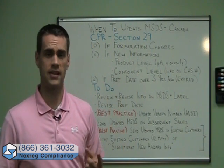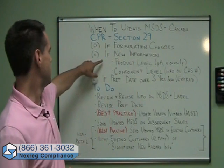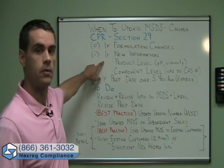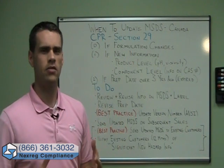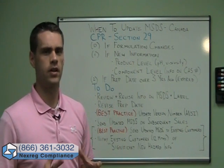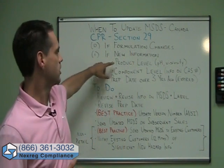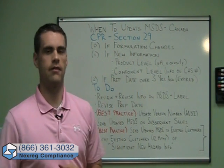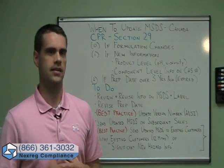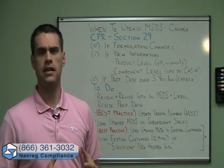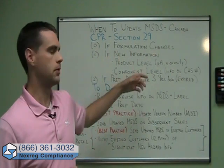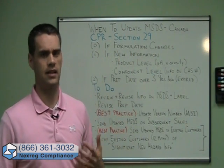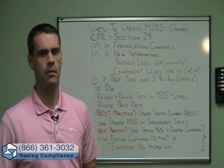The first point that's actually in the regulations is if new information is known by the manufacturer about the product. This new information can fall into one of two categories. First, it could be new product-level information. So you've done some new testing and found out that the pH is a bit different than what you previously thought, or you have new data on viscosity or flammability. You're going to need to update your MSDS.